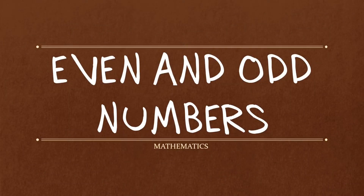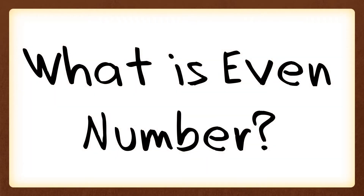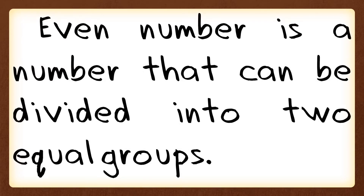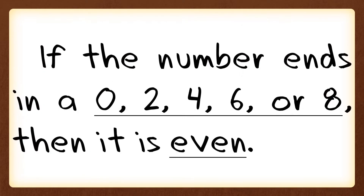In this video we're going to learn about even and odd numbers. So what is an even number? An even number is a number that can be divided into two equal groups, meaning if we divide two numbers there will be no remainder at all. And if the number ends in a zero, two, four, six, or eight, then it is even.